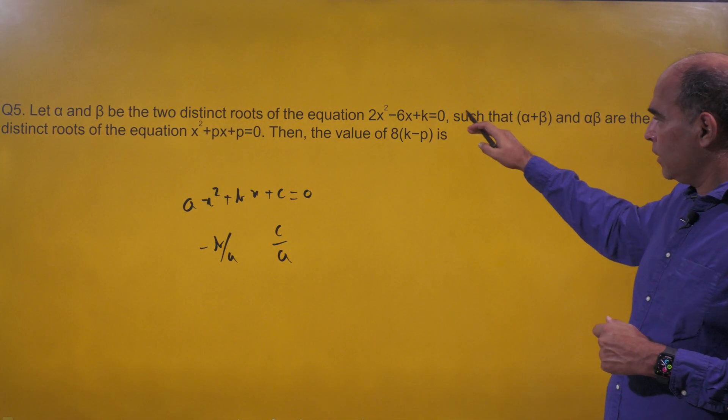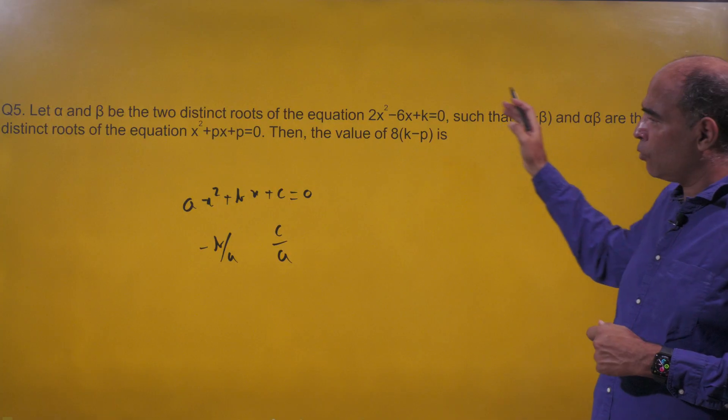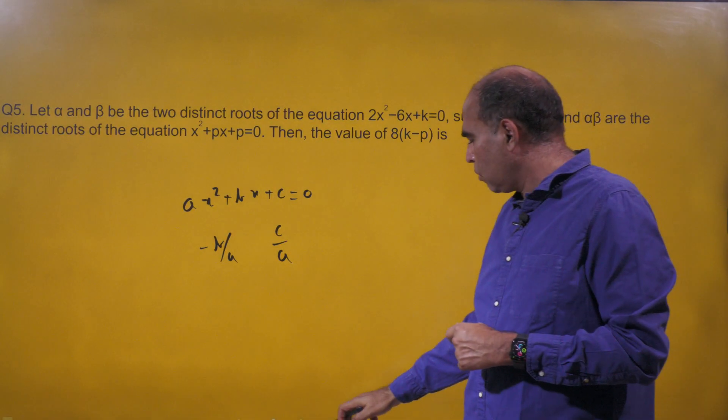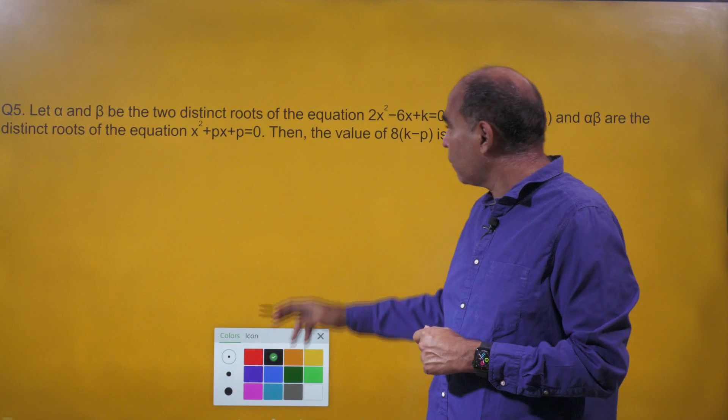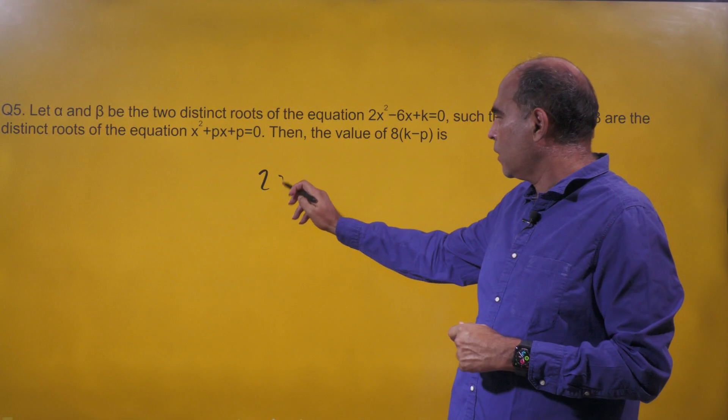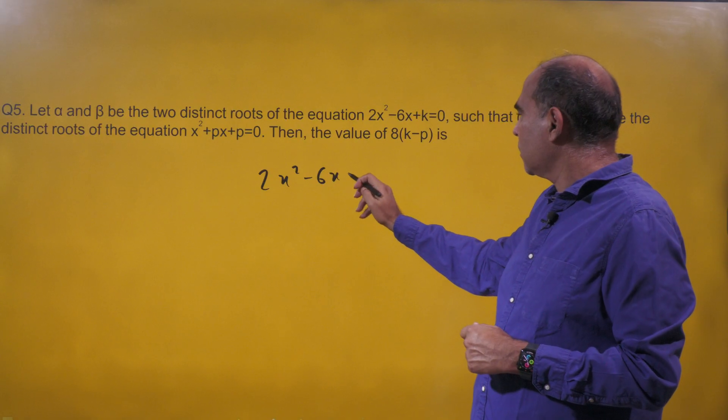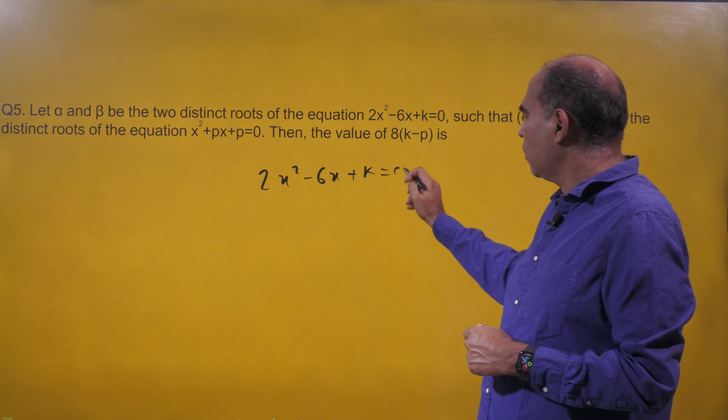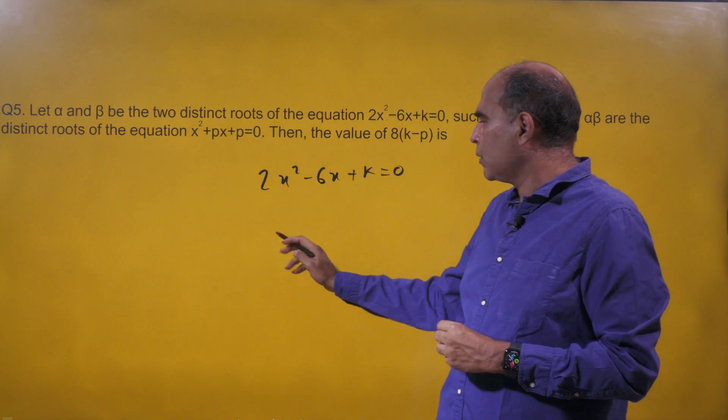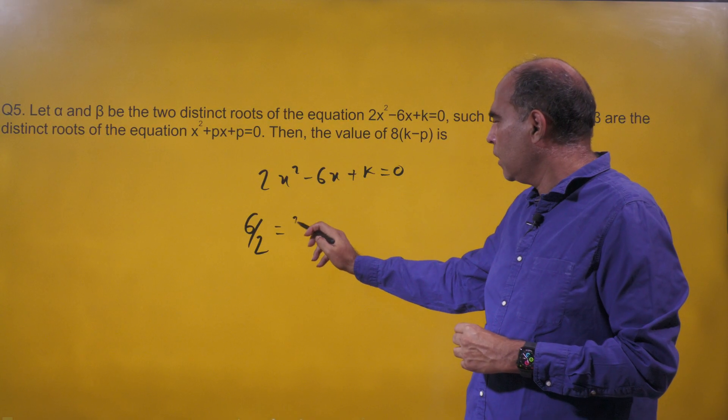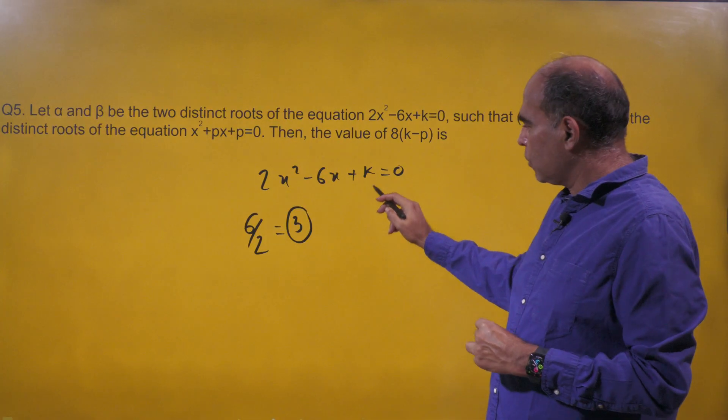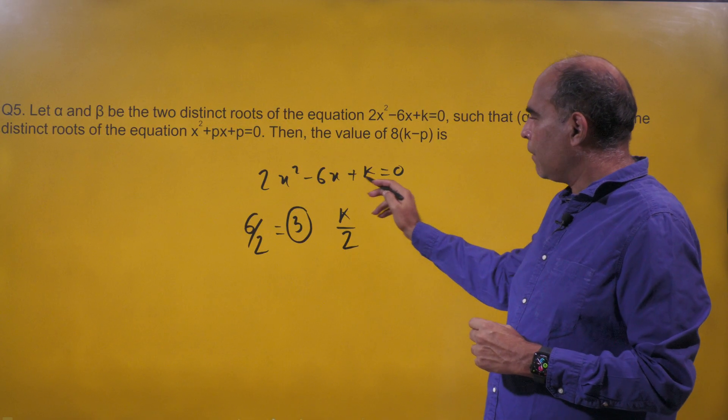What they say is α + β and αβ are the roots of the second equation. So from the first equation where α and β are the roots of 2x² - 6x + k = 0, we get the sum of roots is 6/2, which is α + β = 3, and the product of roots is k/2, which is αβ.